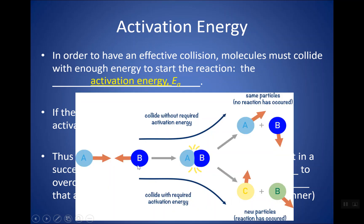So if you have reactants A and B and they collide, it doesn't necessarily mean they're going to have a reaction. If they meet the activation energy — if they both have enough energy — then they will turn into products, like C and D. But if they collide without the right amount of energy, then you don't have a successful collision and they stay as reactants. They just bounce off of each other.